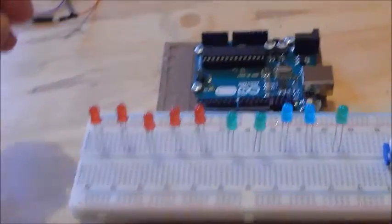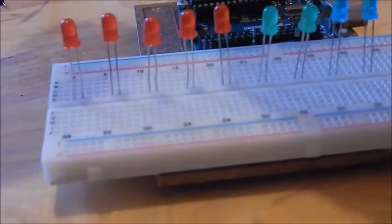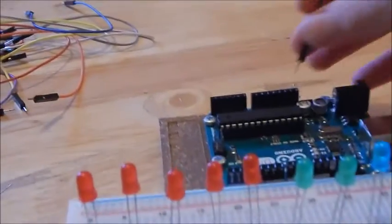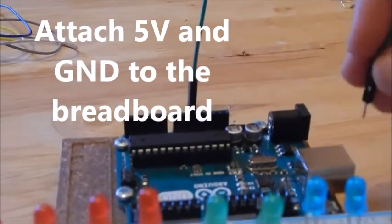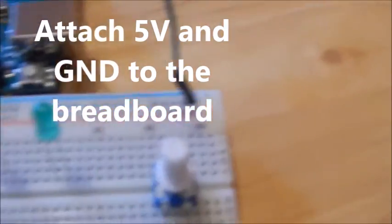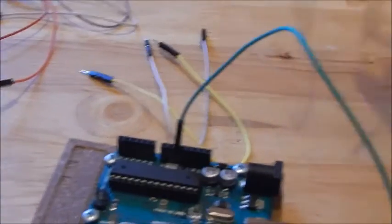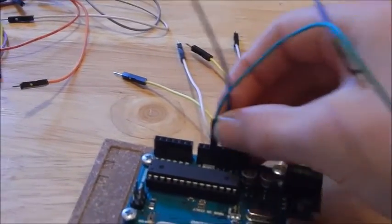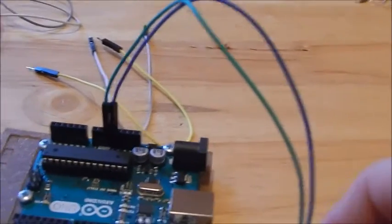Now what you do is you need to hook up your breadboard to the ground and digital pins on your Arduino. Get a wire going from ground to the ground side of your breadboard, and then you need to get another wire going from five volts to the five volts side of your breadboard.